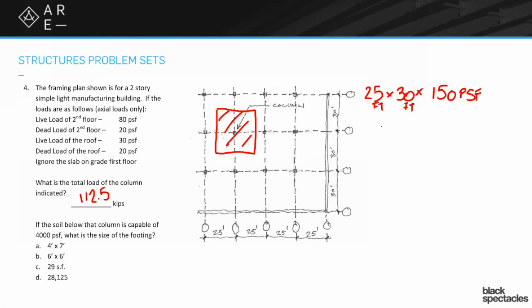That leads us to the second question: if the soil below that column is capable of 4000 psf, what is the size of the footing? The 4000 psf is referring to the soil capacity. If you put a load on that's more than 4000 pounds per square foot, it would start to settle or some problem would start to happen. What kind of area do we need to be able to handle that load?